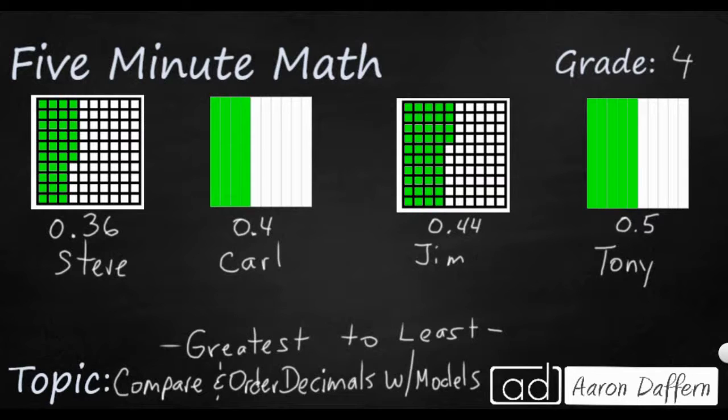Well, we're going to do what we did just a moment ago. We're going to take these tenths. Carl, he's got 4 tenths, but that's the same as 40 hundredths. Tony, we do the same thing. We're going to add a zero, so that 5 tenths turns into 50 hundredths. Now they all go to the hundredths place, and now it's going to be easy to put them in order. So Tony has got our greatest at 50 hundredths. Next is Jim with 44 hundredths. Third is Carl with 40 hundredths, and then Steve is going to come last with 36 hundredths.